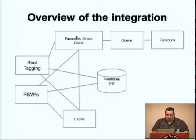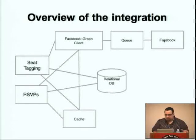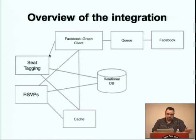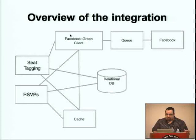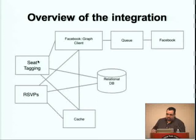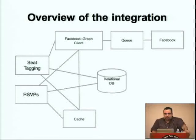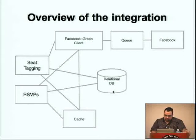We store the actual tags in the database. We don't store any Facebook information in our database other than just the ID. We consider calls to Facebook an expensive operation, so we cache results of those calls — we go to Facebook Graph, request data, and put it in cache. If a user is tagging themselves, we store that in the database. The same applies for the RSVP module: we go to Facebook to get data so we can display whether any of your friends are going, and who your friends are when displaying the tagging dialogue.